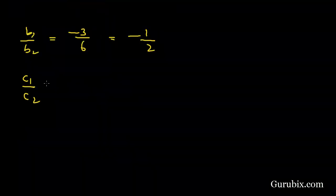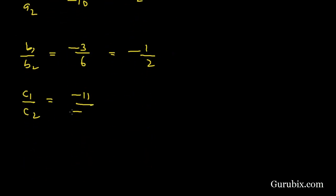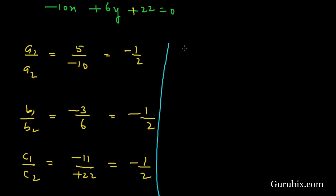And here we have minus 11 over positive 22, not negative, so this is also equals to minus 1 over 2. Here clearly a1 over a2 is equals to b1 over b2 is equals to c1 over c2.